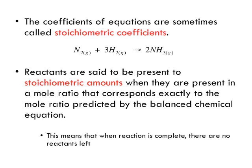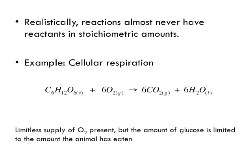Reactants are said to be present in stoichiometric amounts when they are present in a mole ratio that corresponds exactly to the mole ratio predicted by the balanced chemical equation. This means that when the reaction is complete there are no reactants left — we're using up both the nitrogen gas and the hydrogen gas completely, with nothing left over. Ideally that would be great, but realistically that's not what happens. Reactions almost never have reactants in stoichiometric amounts.